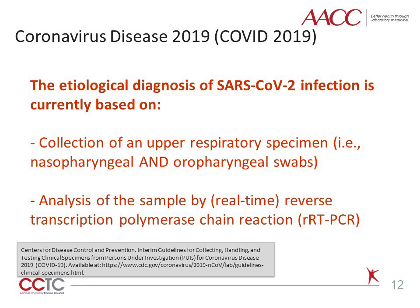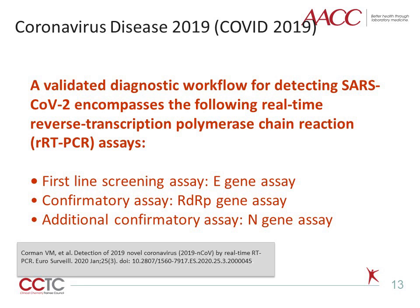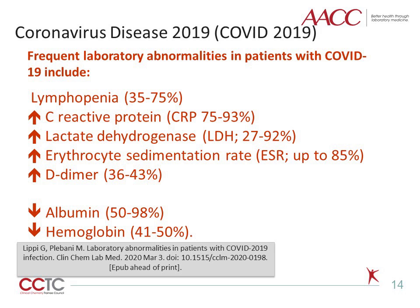The etiological diagnosis of SARS-CoV-2 infection is currently based on collection of an upper respiratory specimen, typically nasopharyngeal and oropharyngeal swabs, and further analysis using real-time reverse transcription polymerase chain reaction (RT-PCR). A validated diagnostic workflow in Europe is based on sequential RT-PCR assays comprising analysis of the E-gene as a first-line screening assay, the RdRp gene as a confirmatory assay, and the N-gene as an additional confirmatory assay.